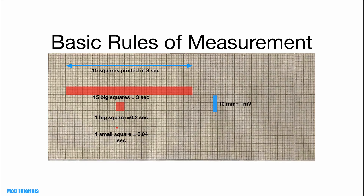What about vertical measurements, which measure voltage? In a normally calibrated ECG, 10 millimeters equals 1 millivolt. We will come to that a little later.